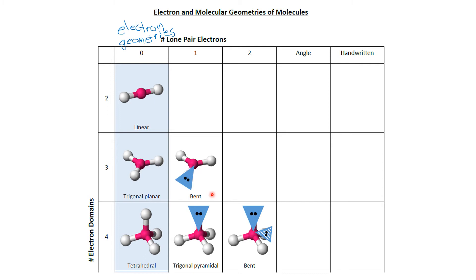If on our trigonal planar geometry one of the domains is a lone pair, what we can actually see are the positions of the central atom and the two atoms that are at the end of the bonding domains. But where that lone pair is located we can't see an atom, so what we end up calling that shape is bent.